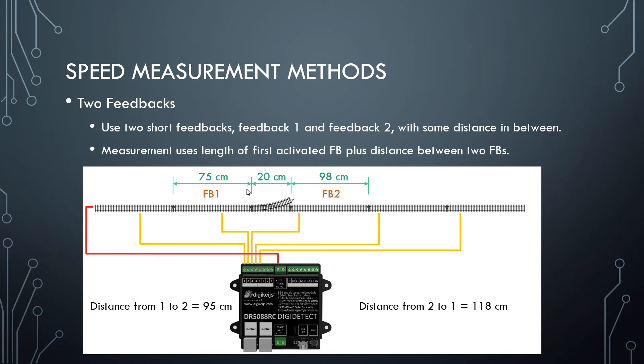The measurement uses the length of the first activated feedback, say FB1 in this example, plus the distance between the two sections, which would be the length of the turnout here. So one measurement would start when FB1 is activated and would finish when FB2 is activated.